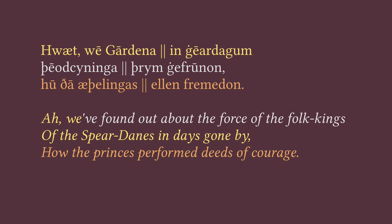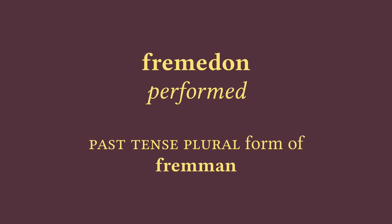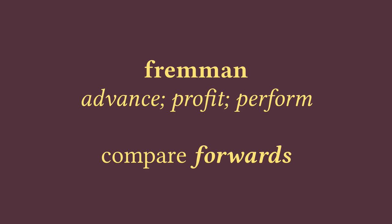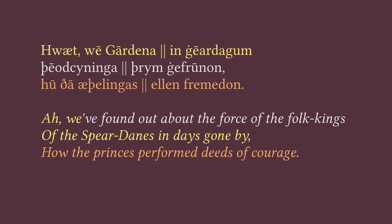So the clause is: 'how the princes — something — courage.' What's our verb going to be? Our verb is 'fremedon,' meaning 'accomplished' or 'performed.' If you look it up in the dictionary, you'll see 'fremman,' to accomplish or perform. This actually comes from the same root as the word 'forward,' with the meaning of advancing a project or promoting someone's interests. Together with 'ellen,' we probably want to translate it as 'performed,' giving us: 'how the princes performed deeds of courage.'